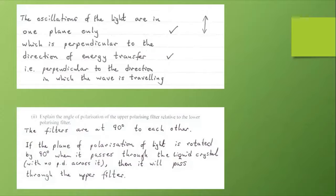We're asked to explain the angle of polarization of the upper polarizing filter relative to the lower polarizing filter. We need to go back to this, but the fact is that the filters are at 90 degrees to each other. If the plane of polarization of light is rotated by 90 degrees when it passes through the liquid crystal with no PD across it, then it will pass through the upper filter.